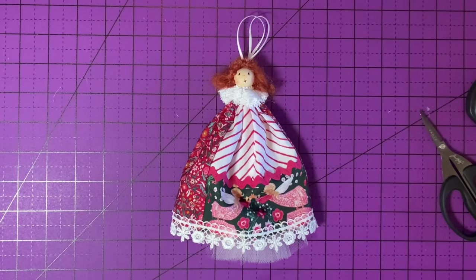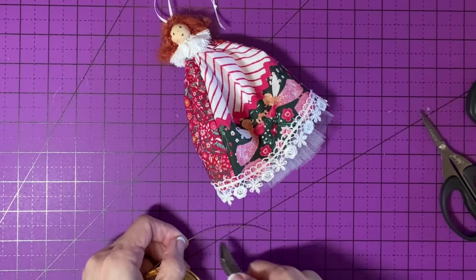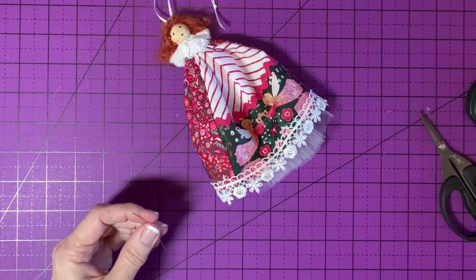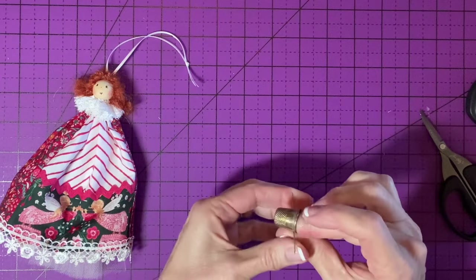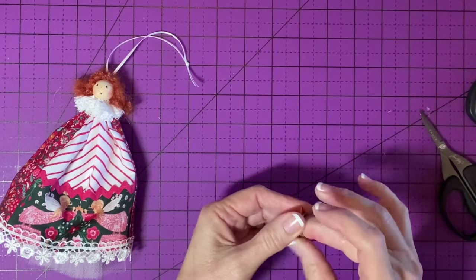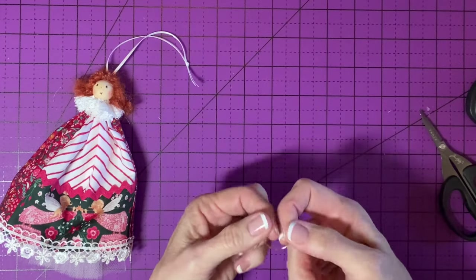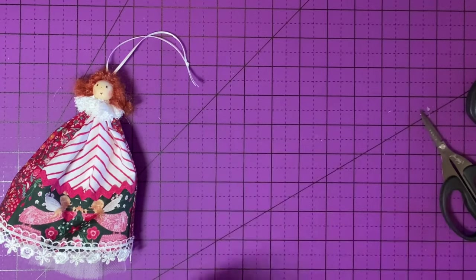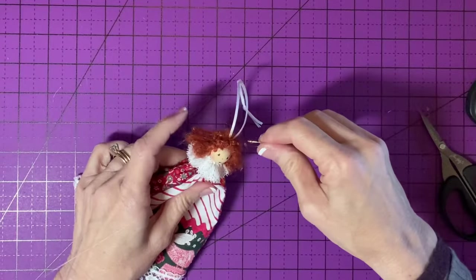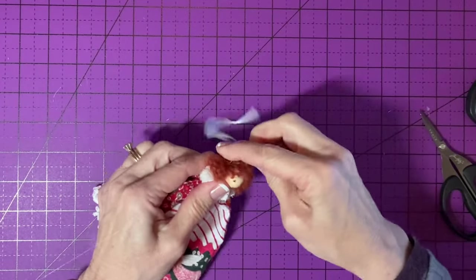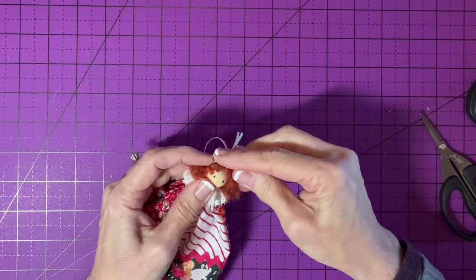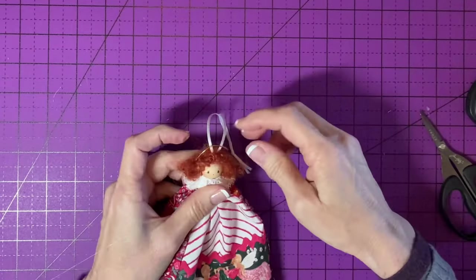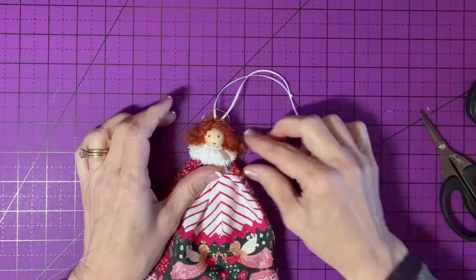Let's add her halo. For her halo, I'm just going to cut two inches of 20 gauge wire with my wire cutters. And then wrap it around my thimble just to make it nice and round. Like that, and then I'll add a drop of glue to each end. Then I will press the ends into the hair. Kind of like that. I bent it a little bit. Hold on, let's see. That's good. That looks good.